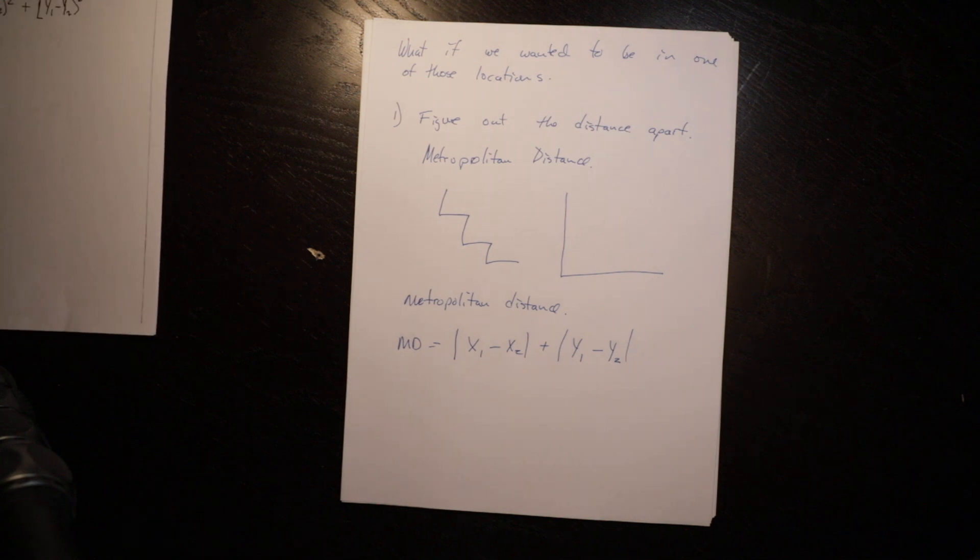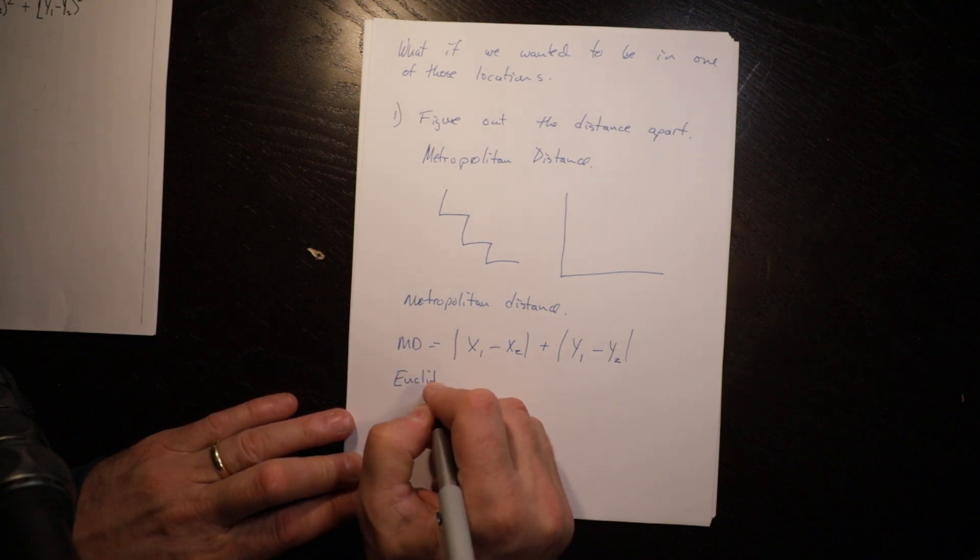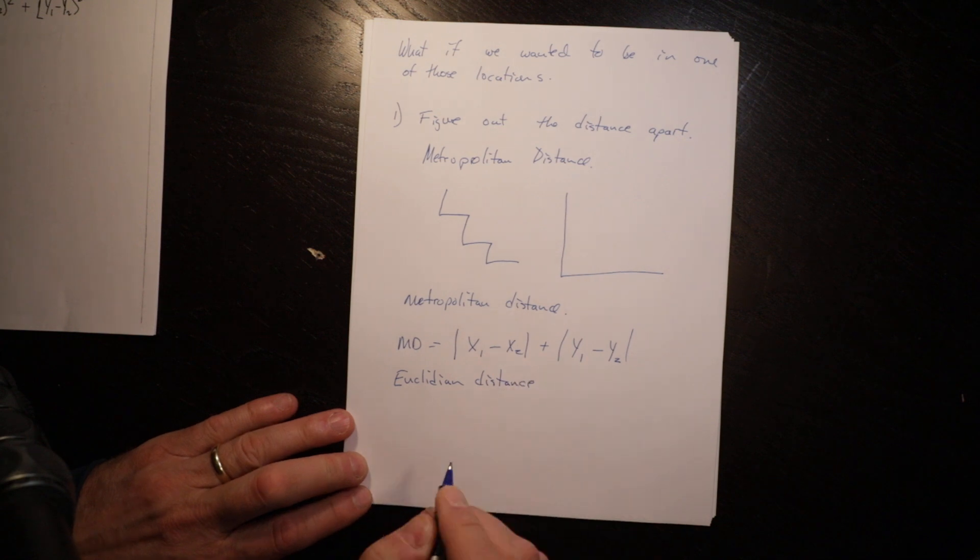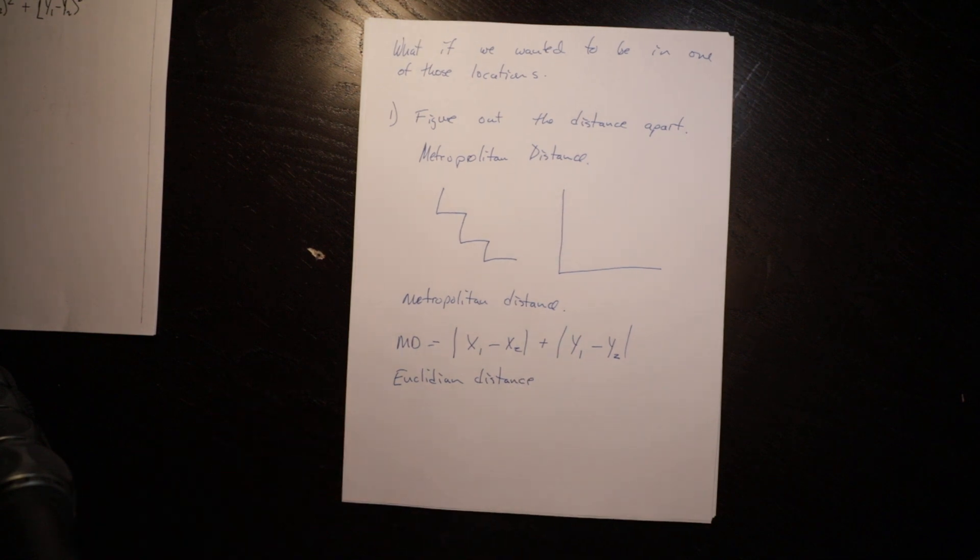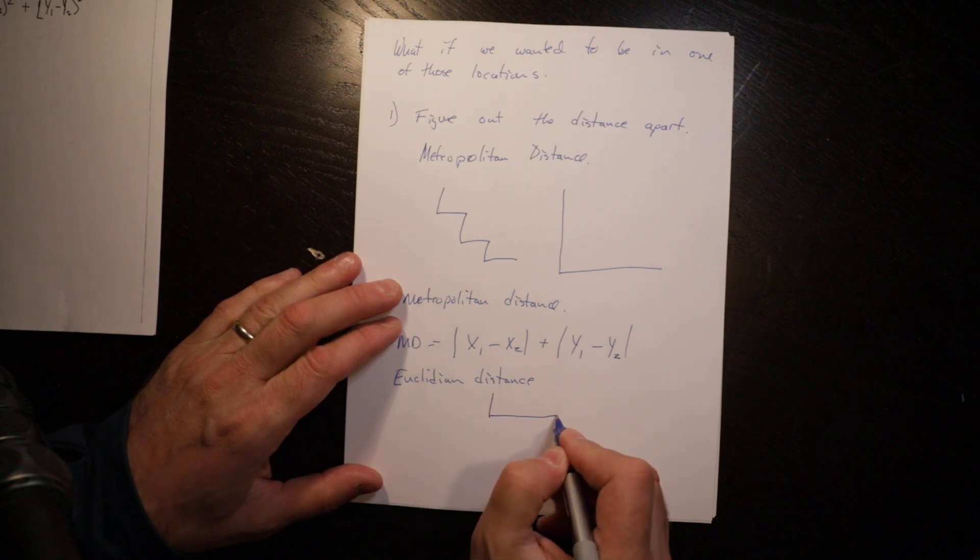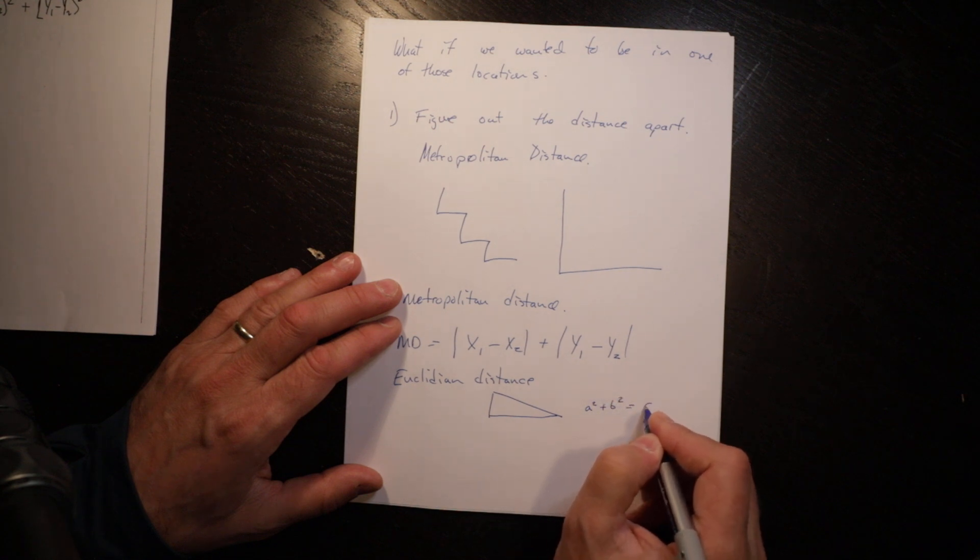The second concept is Euclidean distance. If you remember from high school math, Euclid is the person who came up with the formula for the length of the hypotenuse in a right triangle: A squared plus B squared equals C squared.